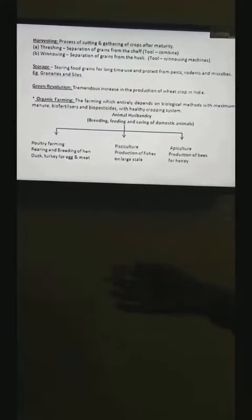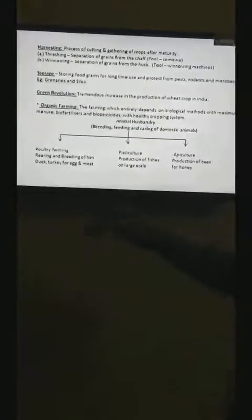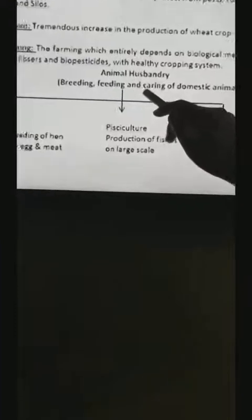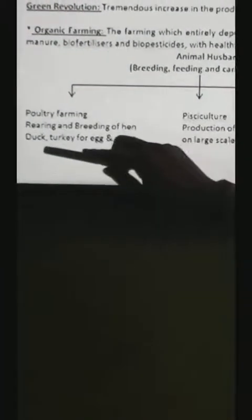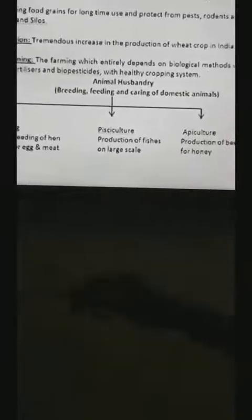The last topic of this chapter is animal husbandry. The science which deals with breeding, feeding and caring of domestic animals is called animal husbandry. There are three branches of animal husbandry. One is poultry farming in which the birds like hen, duck, turkey are reared and bred for eggs and meat. The another one is pisciculture. It is the production of fish on large scale. Beekeeping for honey production.